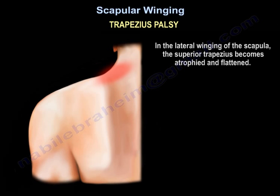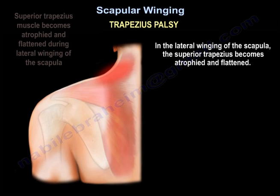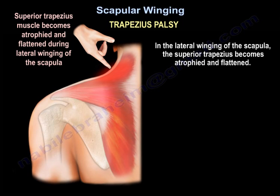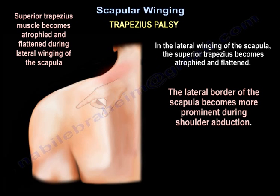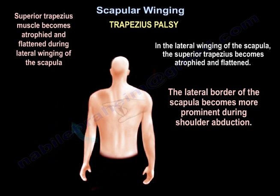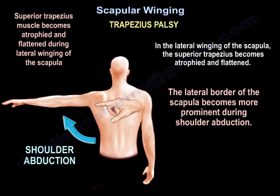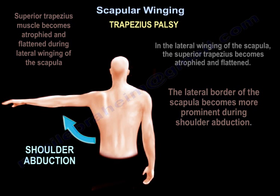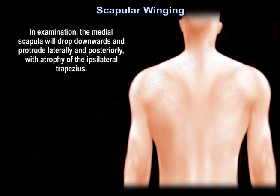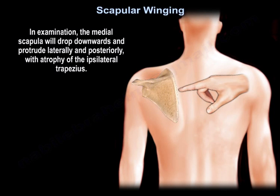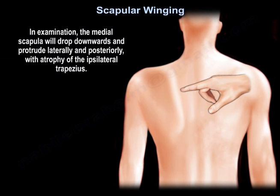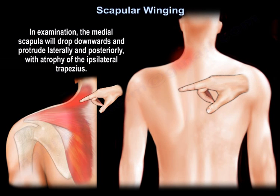In lateral winging of the scapula, the superior trapezius becomes atrophied and flattened, and the lateral border of the scapula becomes more prominent during shoulder abduction. On examination, the medial scapula will drop downwards and protrude laterally and posteriorly, with atrophy of the ipsilateral trapezius.